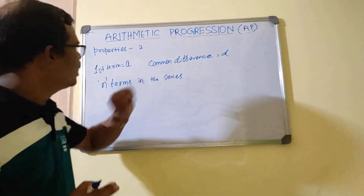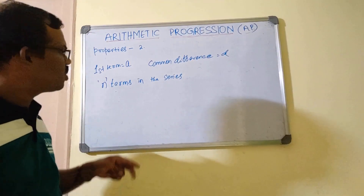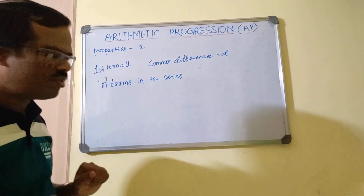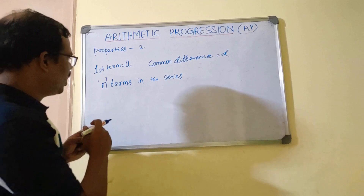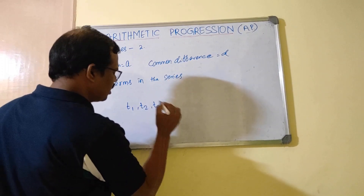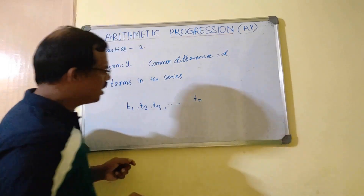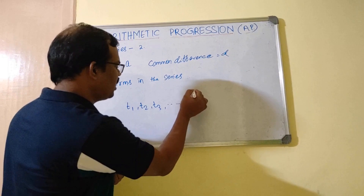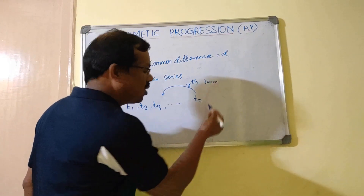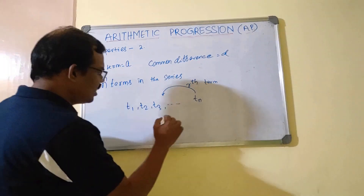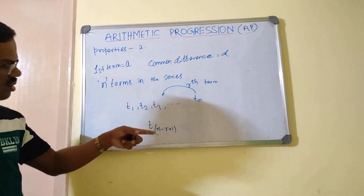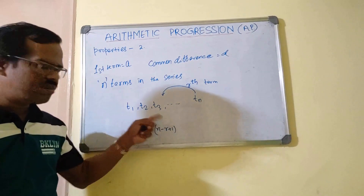I am not erasing anything here as all these things will remain common for our entire discussion around the properties of arithmetic progression. The second property states: if you have n terms — t1, t2, t3, up to t-n — then the rth term from the right will be the same as the (n minus r plus 1)th term from the left, since we consider all terms from the left side starting with t1.